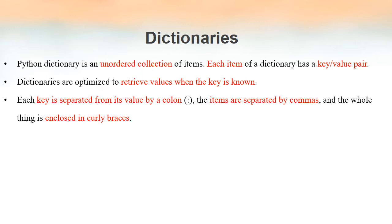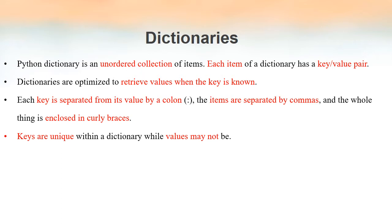Each key is separated from its value by means of a colon. We can think of a dictionary as a pair of curly brackets, inside which each element is a pair. These pairs of elements are separated from each other by means of a comma, and within each pair the key and value are separated by a colon. Within a dictionary, keys cannot be duplicated — all keys must be unique — but values may not be unique; duplicate values are allowed.